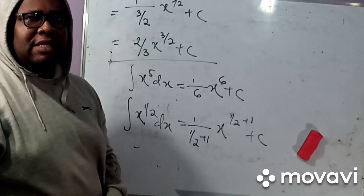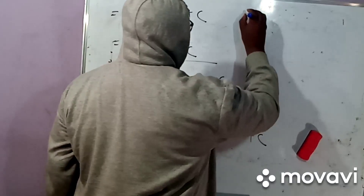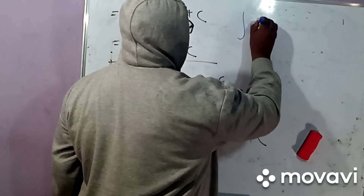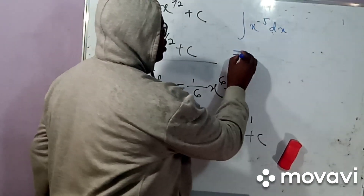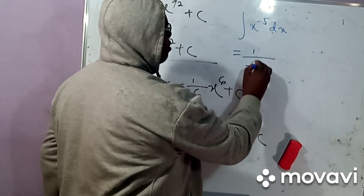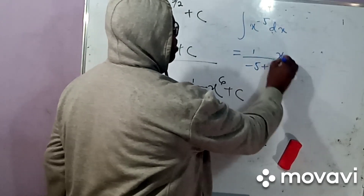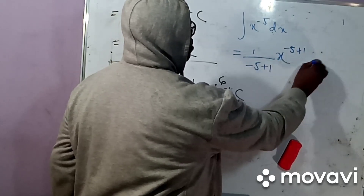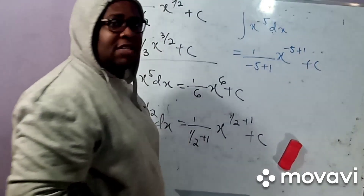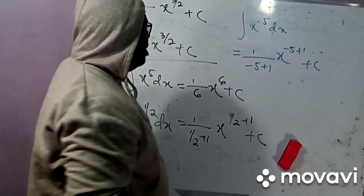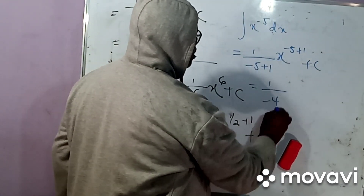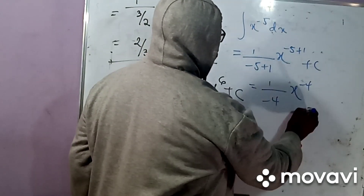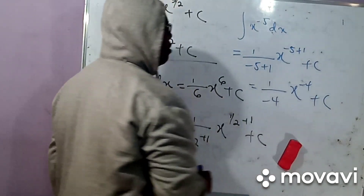Now we take one last example. What if we were asked to evaluate the integral of X to the power minus 5 with respect to X? It simply becomes 1 over minus 5 plus 1, then X to the power minus 5 plus 1, plus a constant of integration. It becomes 1 over minus 4, then X to the power minus 4, plus a constant of integration.